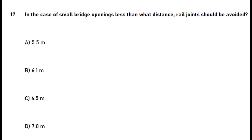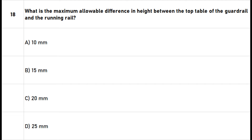Question 17: In the case of small bridge openings, less than what distance should rail joints be avoided? A. 5.5 meters. B. 6.1 meters. C. 6.5 meters. D. 7.0 meters. The right answer is option B: 6.1 meters.